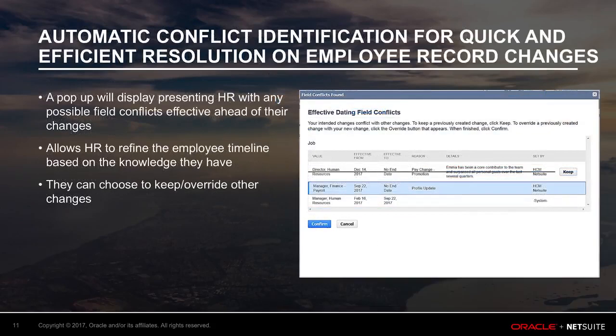In the 2017-1 release, we introduced a new HCM functionality — Effective Dating Support for Employee Record — which allowed backdated and future-dated changes to be made on the employee record. System notes track when a change was made, and this feature added when a field was valid from and to, based on its effectivity dates. For example, an HR team member knows that an employee will be transferred to another department on a future date.